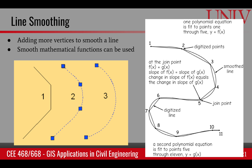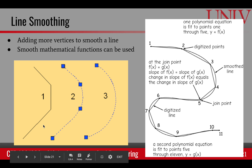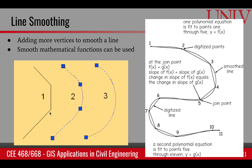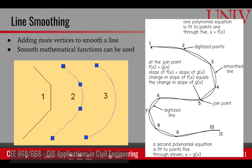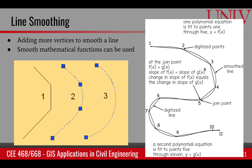The last two topics of this objective are line smoothing and line thinning. In line smoothing, we add new points to make the line smooth or introduce curvature. A mathematical function adds points to a digitized line to create a curved line — for example, points 1 to 5 may use function f(x) and points 5 to 11 use function g(x). We take the digitized points and fit a smooth line through them.